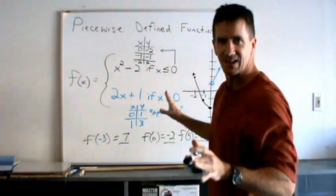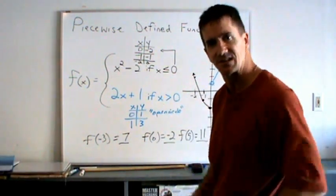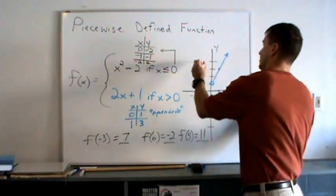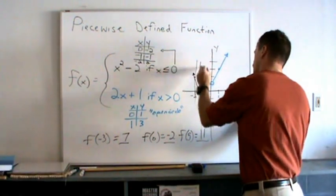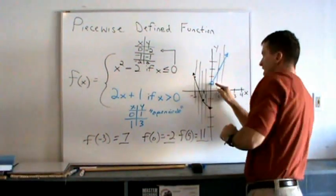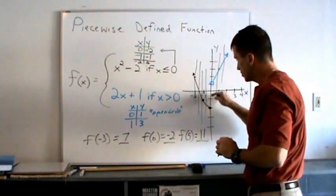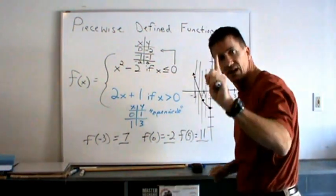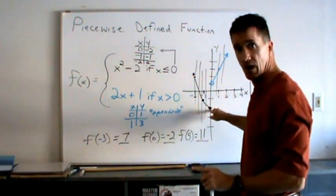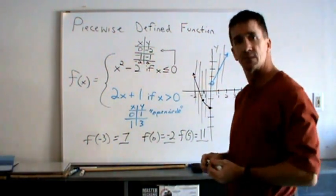And it's always good at the end to do the vertical line test to make sure you did sketch a function. And sure enough everyone, this passes the vertical line test. Every time I draw a vertical line, I only hit once at every location. Even right here, because there's an open circle over a closed dot. And that represents only one value for y when x equal to 0. And that's it.